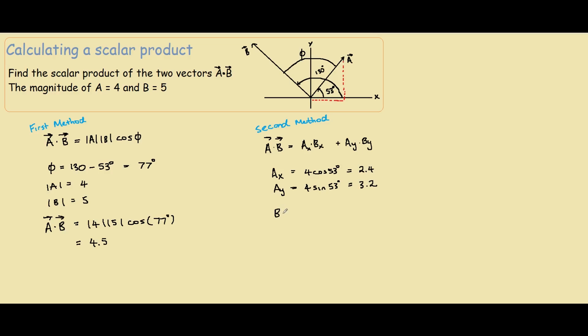Similar to the A vector, Bx would equal 5 cos 130 degrees. This would equal negative 3.2, and By would equal 5 sin 130 degrees. This would equal 3.8.